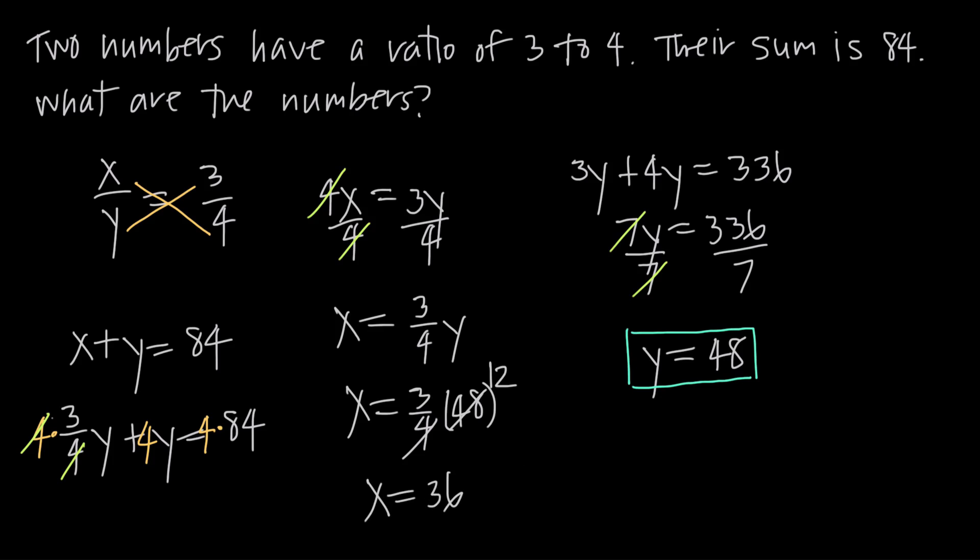So I have two values, one for x and one for y, x equals 36, y equals 48. I need to test to make sure that these satisfy both of the original equations. So what I want to do is plug the numbers first into our proportion, so we have x over y equals 3 over 4.